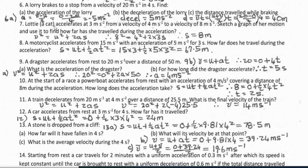Question 7: Lottie the cat accelerates at 3 meters per second squared from 4 meters per second to 8 meters per second — sketch a graph and find the distance traveled. Using v² = u² + 2as: 8² equals 4² plus 2 times 3 times s. Therefore s, the distance traveled, equals 8 meters.